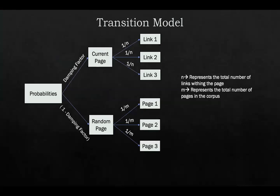That translating into a diagram means the following. We can go to a current page with damping_factor, to a random page with one minus damping_factor. But each of these options have further options. So being in the current page also means that we will have to choose a link at random, and each link will have a probability of one over n, n representing the total number of links in the page. And being at the random page will mean that we will choose a page at random, and this means that each page has a probability of one over m of being chosen, where m represents the total number of pages in the corpus.